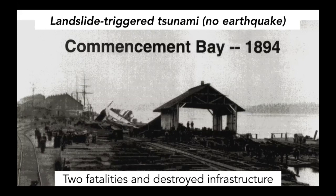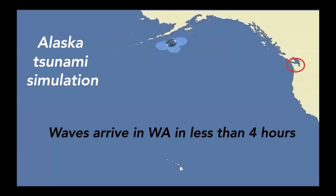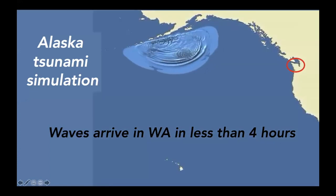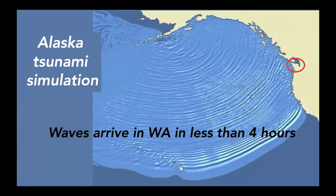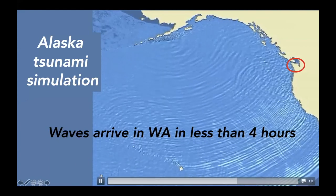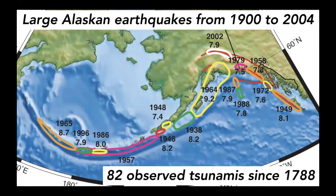Landslide-generated tsunamis are believed to be the most frequent source of tsunamis here in Washington. We also know that we receive tsunamis from other places. This animation shows waves propagating from Alaska, reaching the coast of Washington in just under four hours. We need to be very concerned about these types of tsunamis as well, because they happen so frequently. This map shows about the last 100 years of large Alaskan earthquakes, with areas of rupture, magnitude, and year. Notably, since the year 1788, there have been 82 observed tsunamis in Alaska.